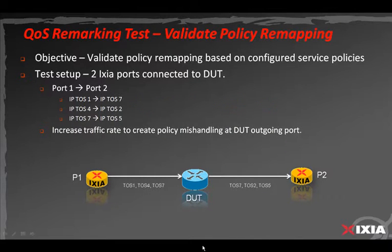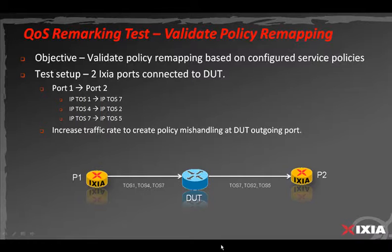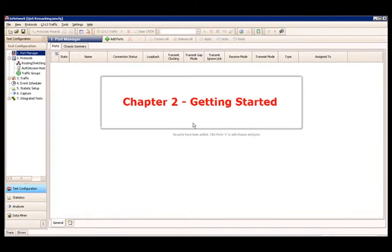Chapter 1, Test Topology. The objective of this test is to validate the policy remapping based on configured service policies on the DUT. Two test ports are required for this test. Port 1 will be used as a transmit port, and port 2 will be used as a receive port. The DUT is configured with a QoS remarking policy. It will take IPTOS value 1 and change it to 7, from 4 to 2, and from 7 to 5, respectively. Port 1 will transmit traffic over IPTOS values 1, 4, and 7, and port 2 will be used to monitor the remapping performed by the DUT.